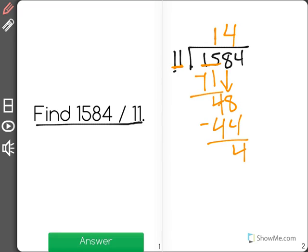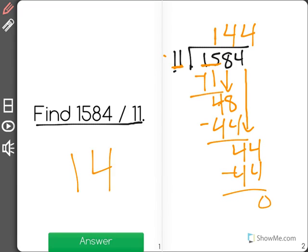My remainder down here will be 4, and I'll bring down the last number, and now I have 44 divided by 11, which I know will give me 4, and there will be none left over, leaving the answer as 144.